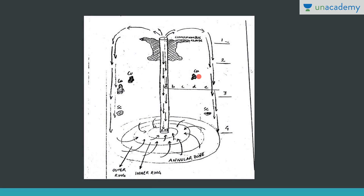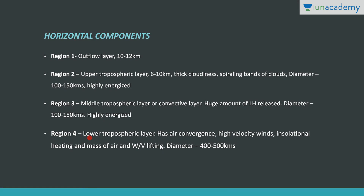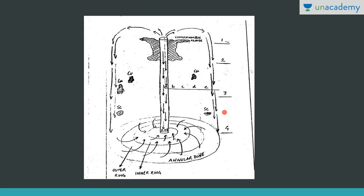Region 4 is the lower tropospheric layer where air convergence is taking place, high velocity winds are present, and the mass of air and water vapor are lifting. The diameter here is maximum, at 400 to 500 km. Convection and air convergence are taking place in this region.